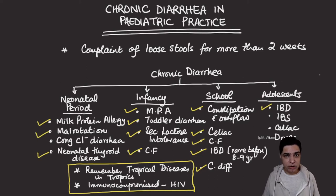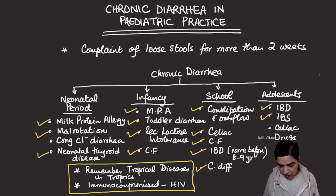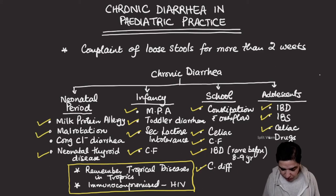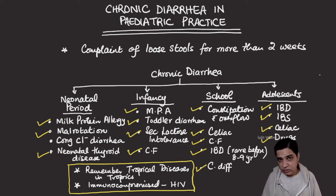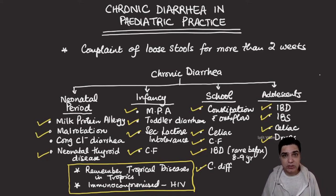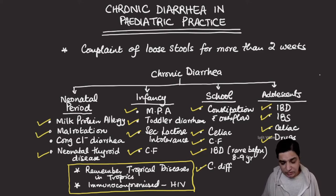In adolescents, inflammatory bowel disease is more common, presenting with chronic diarrhea with or without blood, low-grade fever, weight loss, and extra-intestinal manifestations such as joint pains and mouth sores. Irritable bowel syndrome — a diagnosis of exclusion — may explain diarrhea alternating with constipation. Celiac disease can also persist if the patient is not on a gluten-controlled diet. Drug history is important as some drugs cause diarrhea. In tropical areas, tropical diseases and opportunistic fungal infections in immunocompromised or HIV-positive children should also be considered.